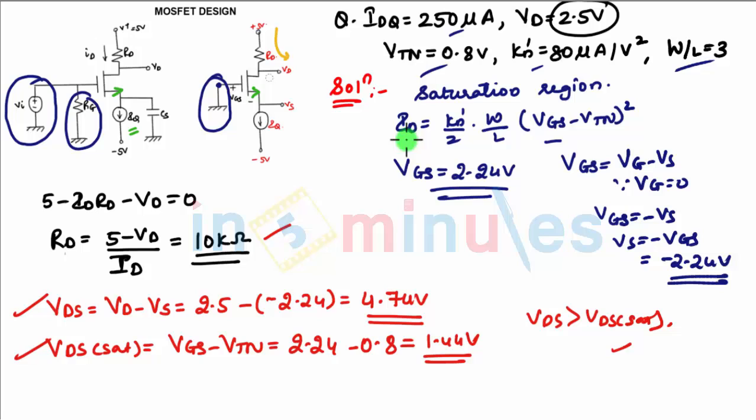Why are we doing this? If the transistor is not in saturation, then the equation for the current will change and the value of IDQ would be changed and the value of RD would have changed. So for this we need to check whether the transistor is operating in the saturation region. Thank you for watching In 5 Minutes.